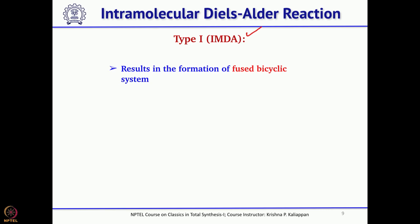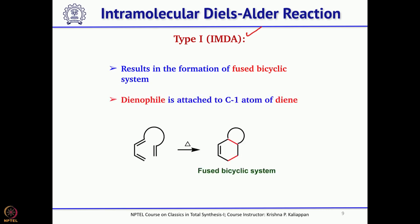Type 1 intramolecular Diels-Alder reaction means the dienophile is attached to carbon number 1 of the diene. If you look at the diene and number from 1 to 4, and the dienophile is attached to carbon number 1, then this reaction is called IMDA type 1. This normally gives a fused bicyclic system.